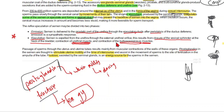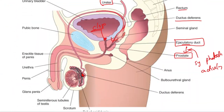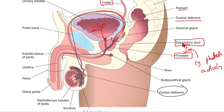Reflex ejection of semen is divided into two parts: emission and ejaculation. Semen is delivered to the prostatic part of the urethra through the ejaculatory duct by peristalsis. The vas deferens runs from the epididymis, and this forms the ejaculatory duct leading to the urethra.